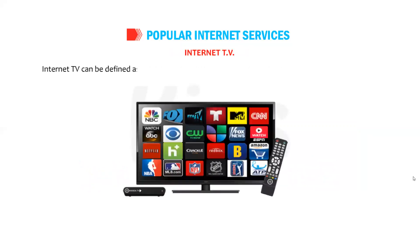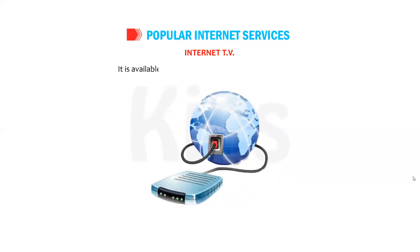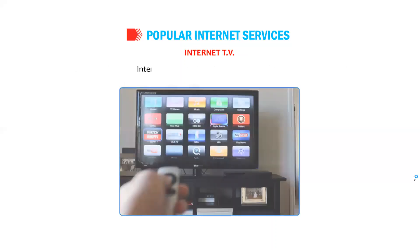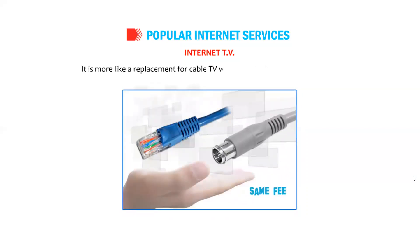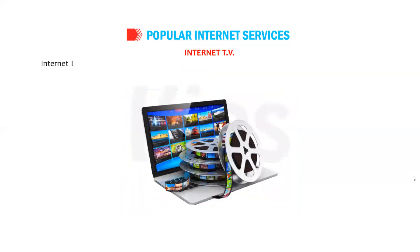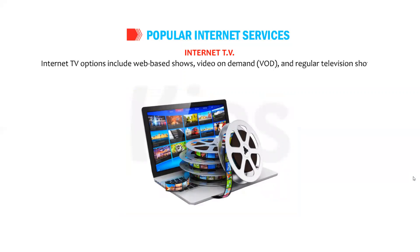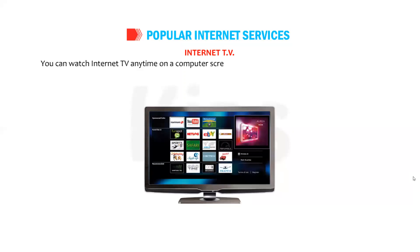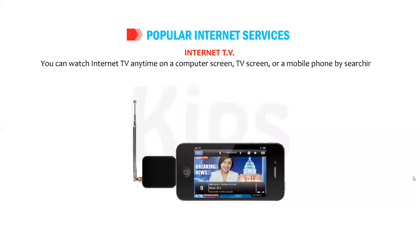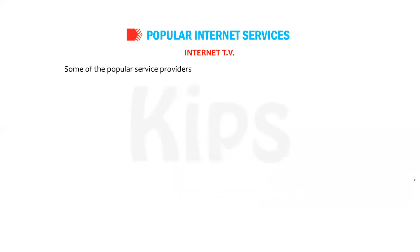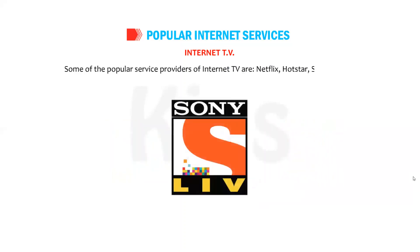Internet TV can be defined as a medium of delivering television content over an internet connection. It is available wherever a broadband connection exists and is also known as web television. It is more like a replacement for cable TV with similar offerings. Internet TV options include web-based shows, video on demand (VOD), and regular television shows hosted on a channel's website. You can watch internet TV anytime on a computer screen, TV screen, or mobile phone. Popular service providers include Netflix, Hotstar, and Sony LIV.